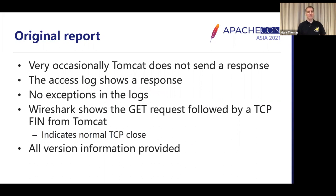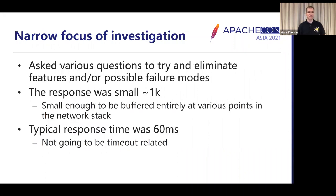What it told us was that very occasionally Tomcat didn't send a response. The access log showed a response, but there was no response, and there were no errors or exceptions in the normal Tomcat logs. They looked at Wireshark traces, and that showed a normal HTTP GET request followed by a normal clean TCP close from Tomcat. They provided all of the version information and were using a fairly recent version. We asked various questions to try and eliminate features and possible failure modes, really trying to narrow down where we need to look next.